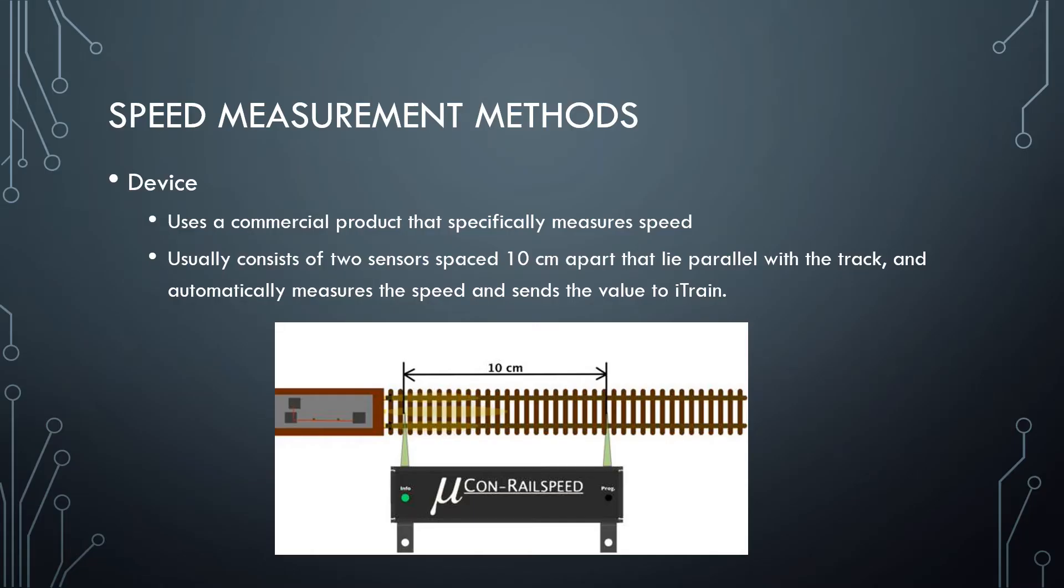The device type is a commercial product which is specially made to measure speed. They often consist of two sensors shown here and here which are 10 centimeters apart and lie parallel with the actual track.